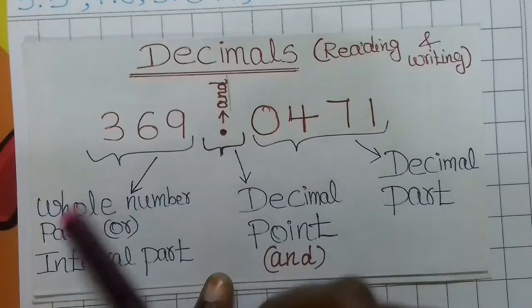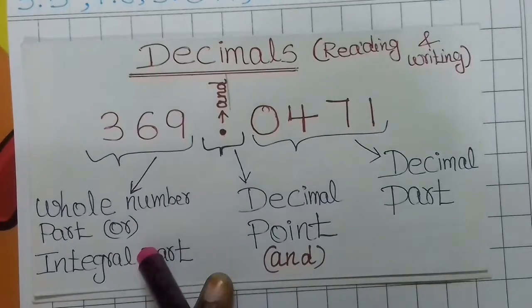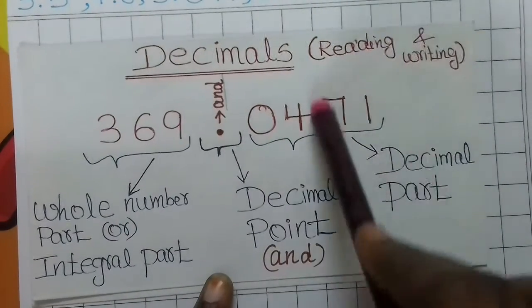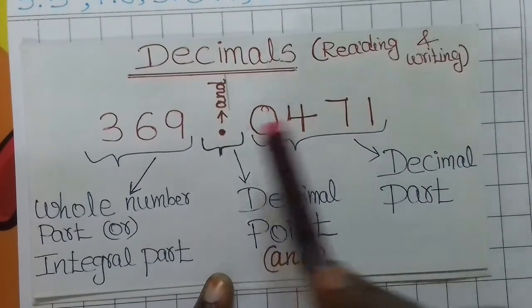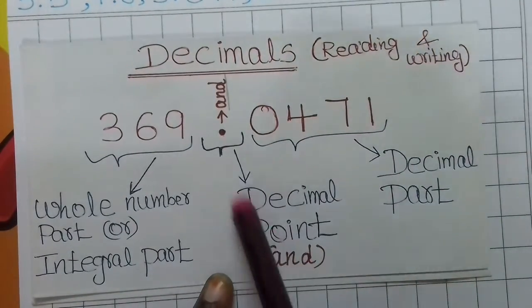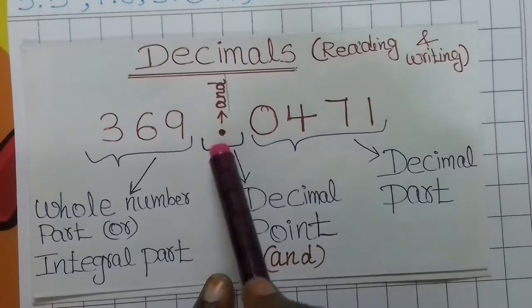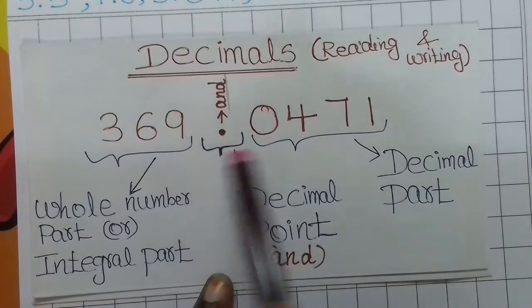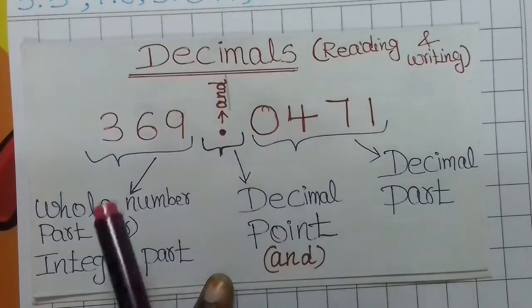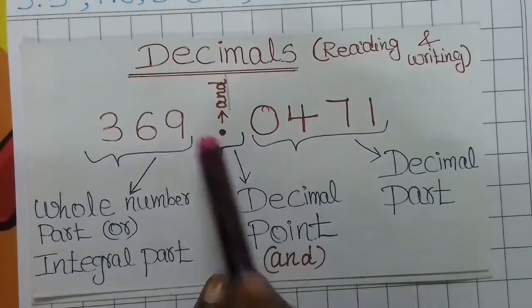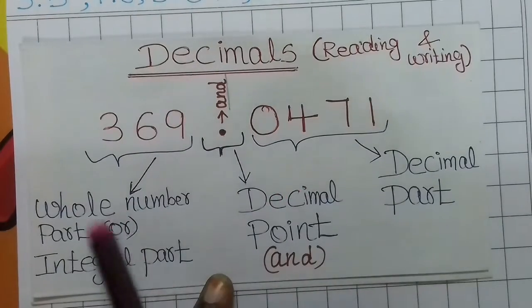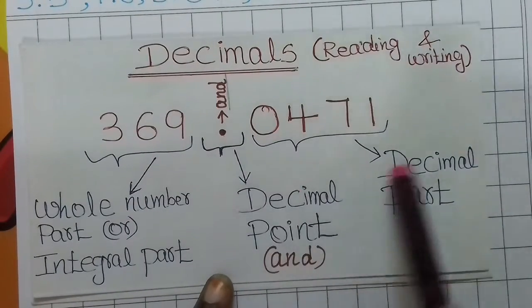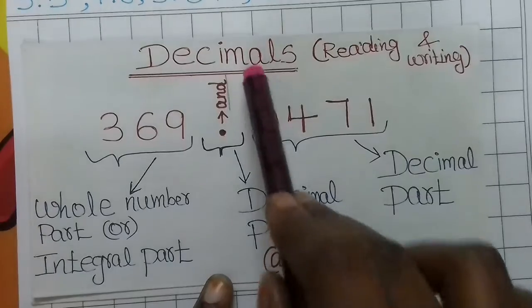The point to the left of the decimal point is called the whole number part or integral part. The point to the right is called the decimal part. The center symbol is the decimal point. We differentiate these because when comparing, we compare the whole number part first, then the decimal part digit by digit.